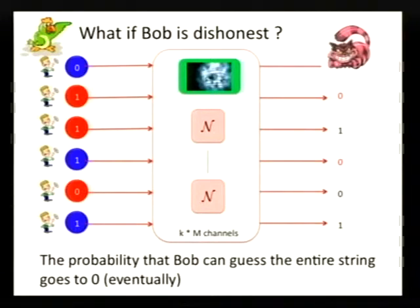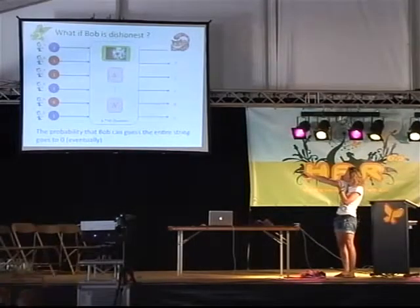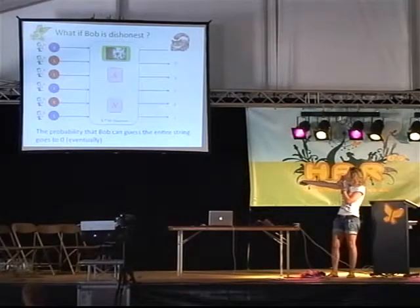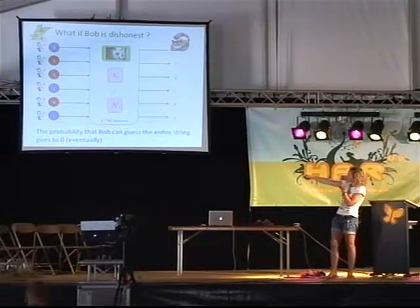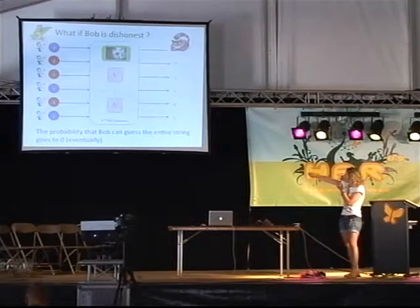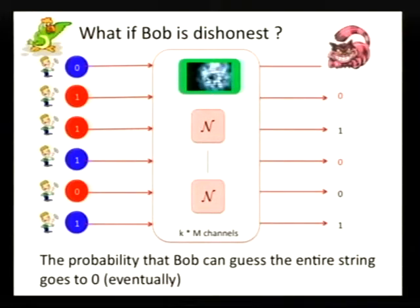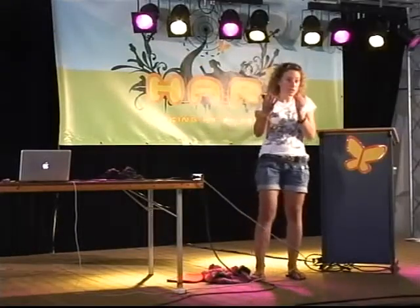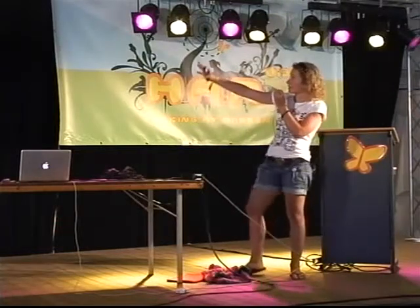But what happens if Bob is dishonest? In this case we are exactly in the setting we looked at earlier. We sent many of these bits, and Bob may have a quantum computer and do any encoding he wants, but he only has some number of noisy storage channels at his disposal. The uncertainty relation tells us that if the capacity of this channel is too low, then the probability that Bob guesses the entire string correctly goes to zero as the number of bits grows large. This is how the storage assumption together with the uncertainty relation comes in — the uncertainty relation tells us how much information must pass through the storage, and the capacity limitations of the storage then ensure the probability goes to zero.